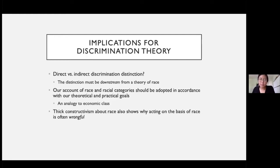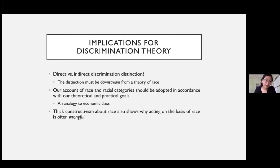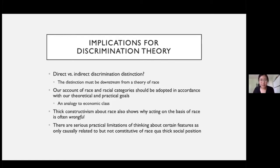I also think the thick constructivist account of race shows why acting on the basis of race is often wrongful. In discrimination theory there's a question about the wrong-making feature of discrimination. If you take the constructivist account, it becomes clear how acting on the basis of being black is demeaning — as Deborah Hellman would say — or compounds injustice, or reinforces hierarchy, as Gary Peller would put it. It connects the descriptive and the non-moralized quite well. And there are really serious practical limitations of talking about certain features as only causally related to rather than constitutive of race — that cashes out in a series of, in my view, deeply problematic judicial decisions in discrimination cases in the US context. Thank you for inviting me.